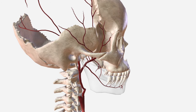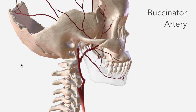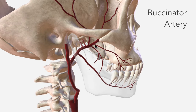Next, we have the buccinator artery, which, as its name would suggest, supplies the buccinator muscle — one of the muscles of mastication.